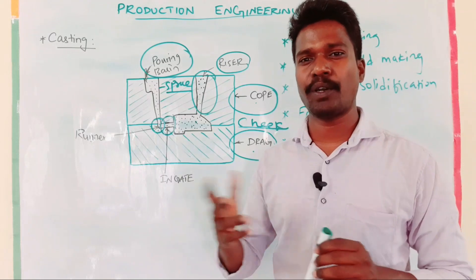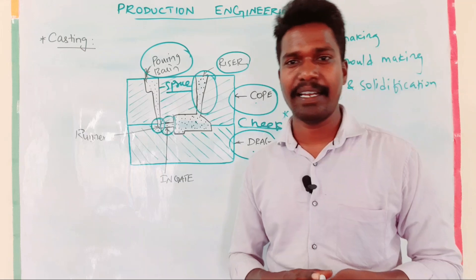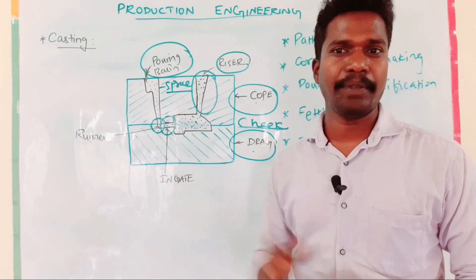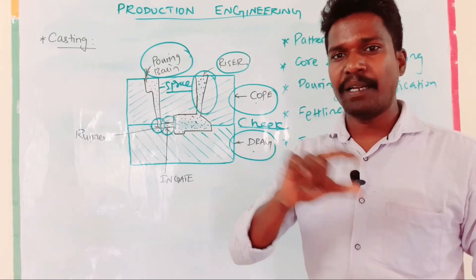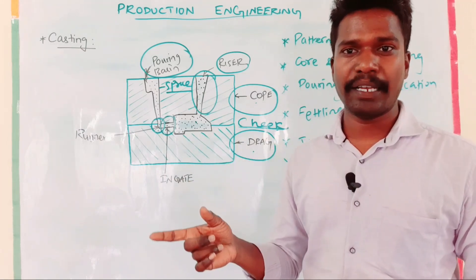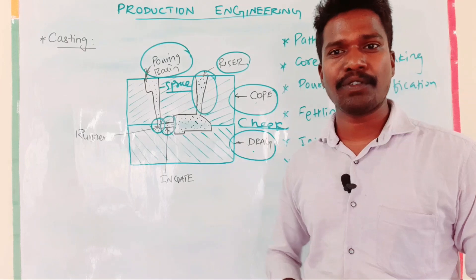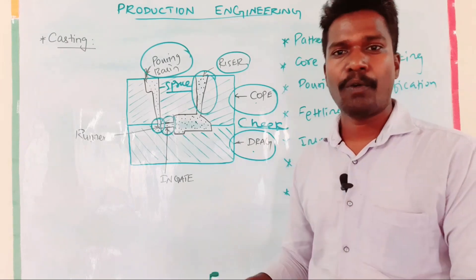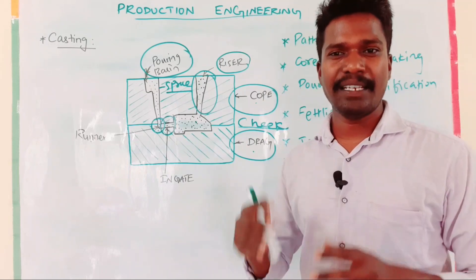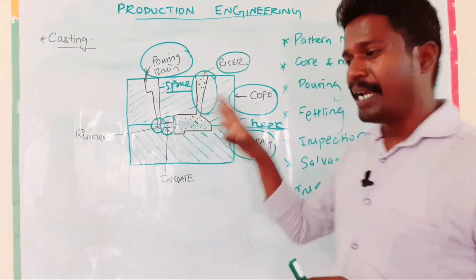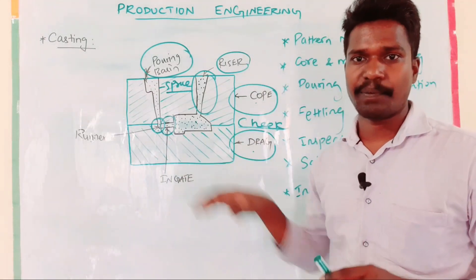There are casting defects as output. Mold types — it is not just pattern; it is expandable or permanent pattern. Molding methodology includes bench molding, floor pit molding, machine molding. The main topic next is pattern making, which we will discuss.